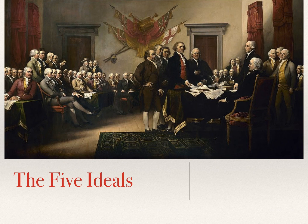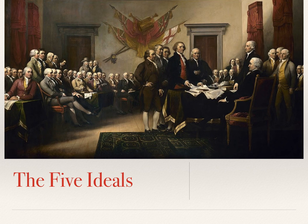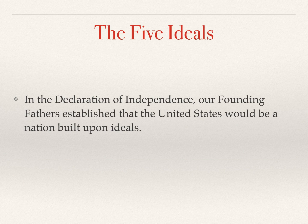Our notes today are about the five ideals. Our textbook is really organized around five main ideals, and those ideals come out of our Declaration of Independence. There's a famous painting here of the signing of the Declaration, and that's really the source for where these five ideals come from. Our founding fathers decided and basically established that the US would be a country built on some founding ideals.